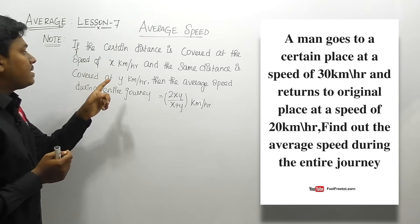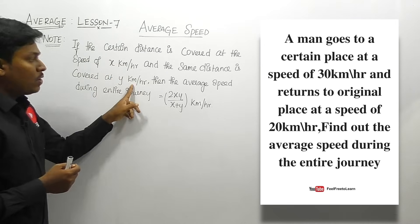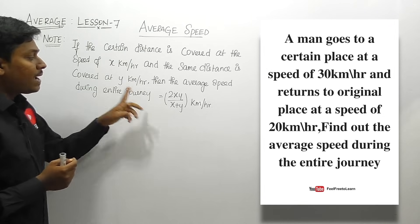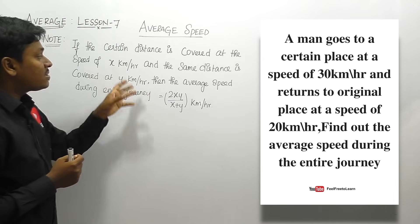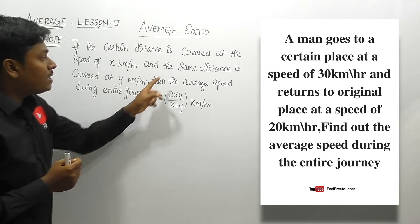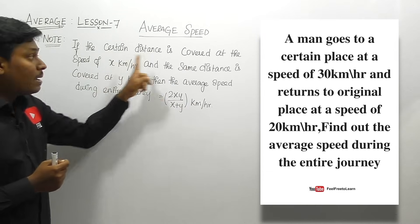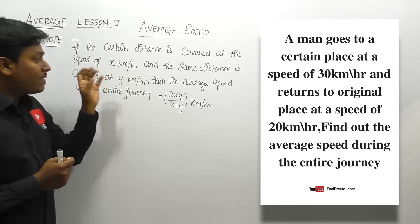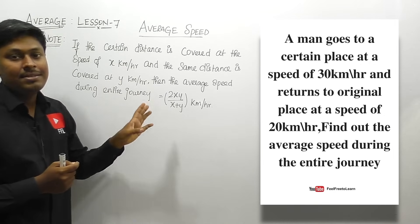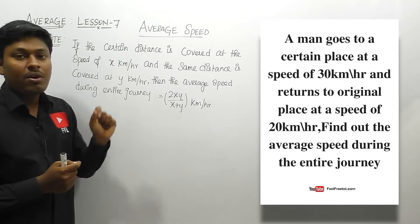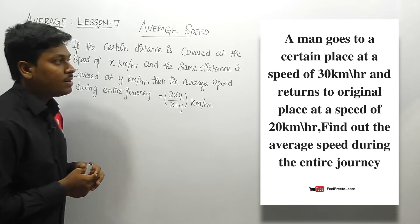Formula number one: if a certain distance is covered at a speed of x kilometers per hour and the same distance is covered at y kilometers per hour, then the average speed of the entire journey is 2xy divided by x plus y. The key point to remember here is that in both cases the distance must be the same. If the distance is the same for the entire journey, use the formula 2xy divided by x plus y.